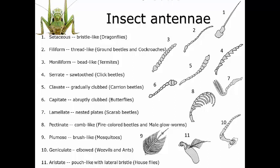Next is clavate antennae — these start out thin and gradually thicken at the end to a club shape, found in certain carrion beetles. Capitate antennae are similar to clavate but thin throughout most of the length and then abruptly widen — like the head of a pin on a very thin segment. Butterflies have capitate antennae. Lamellate antennae, found in scarab beetles, have nested plates at the end that look like stacked eyelashes.